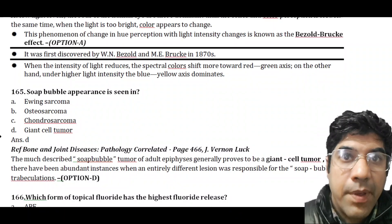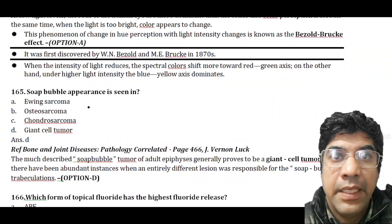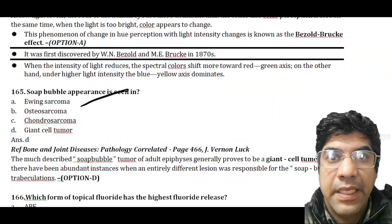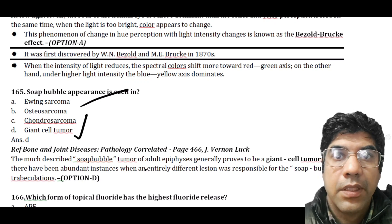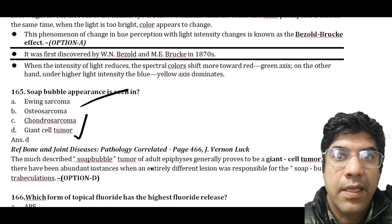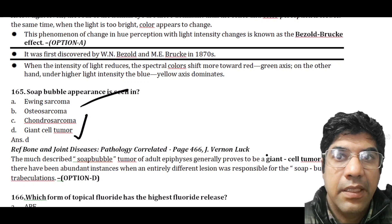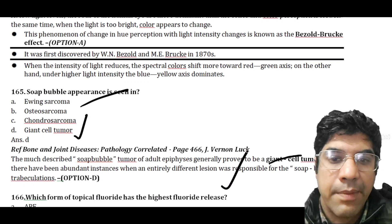The soap bubble appearance is seen in a giant cell tumor — specifically in the giant cell tumor of adults. In a giant cell tumor, you will see a soap bubble trabeculation pattern.